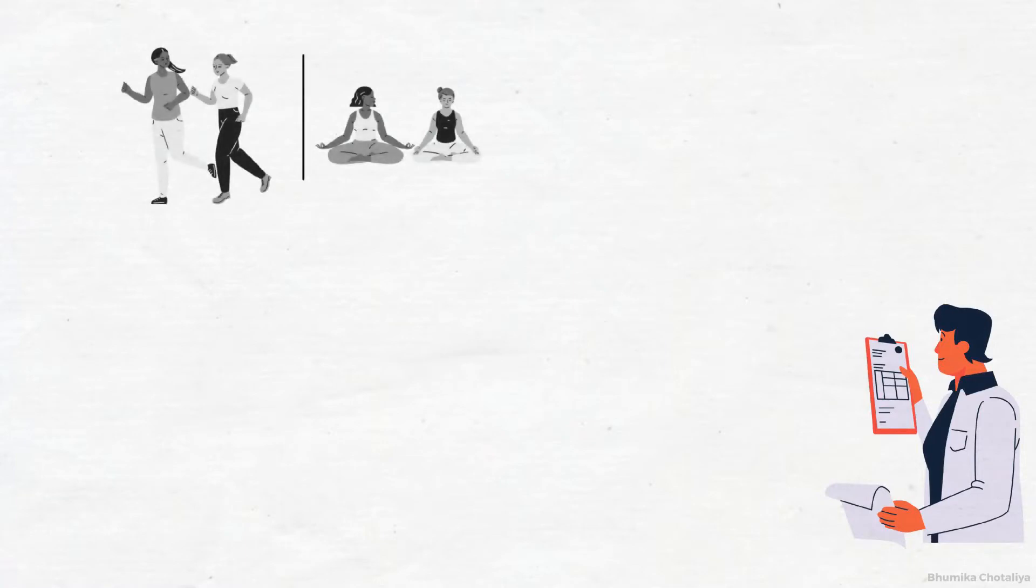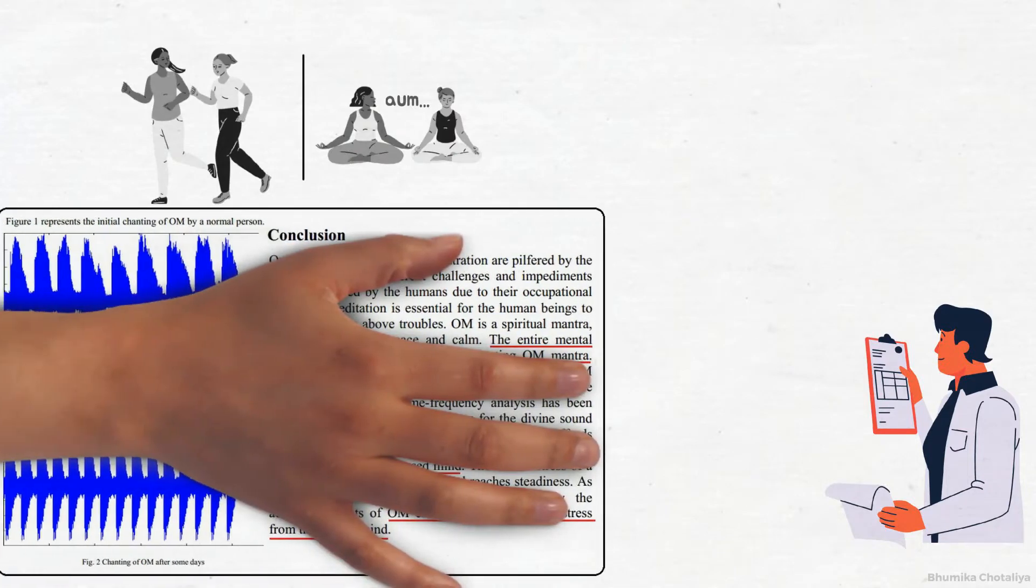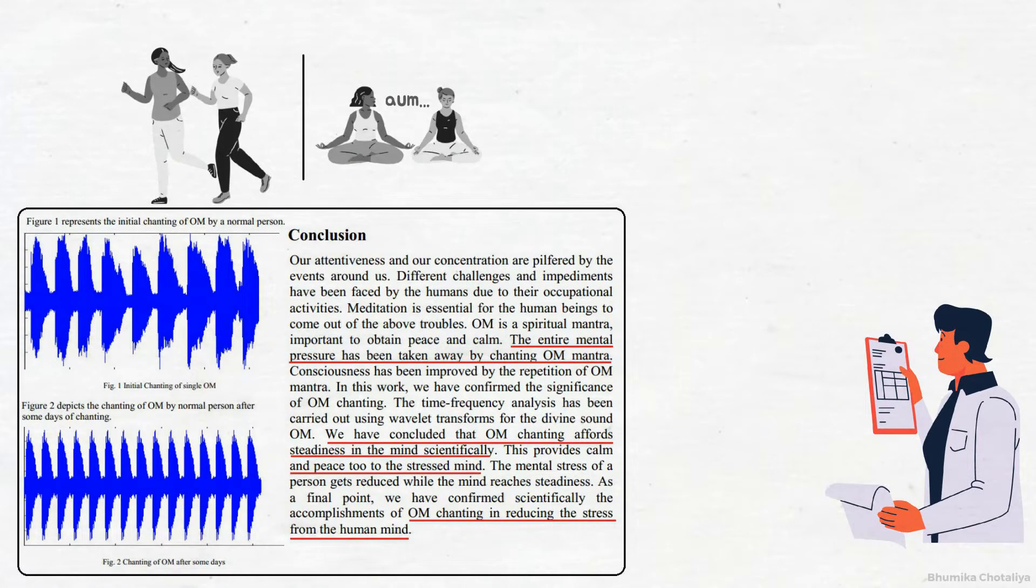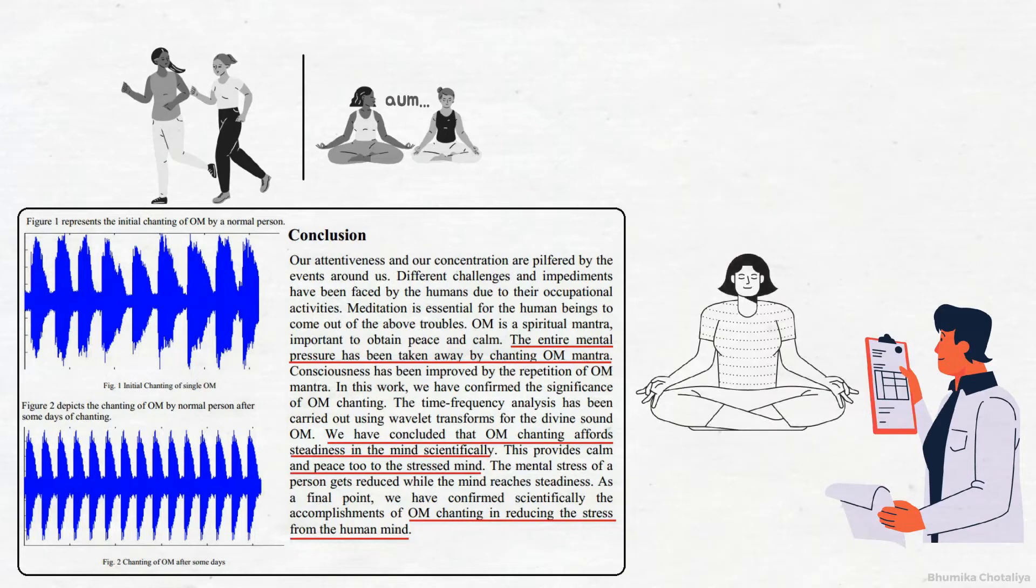A few years ago, scientists conducted an experiment in which participants who had never chanted the Om Mantra were asked to chant it for a few minutes, and each of these chants were recorded. The time frequency analysis showed irregular waveforms, which indicated unsteadiness in the mind. They were asked to chant the mantra regularly, and after a few days the experiment was repeated.